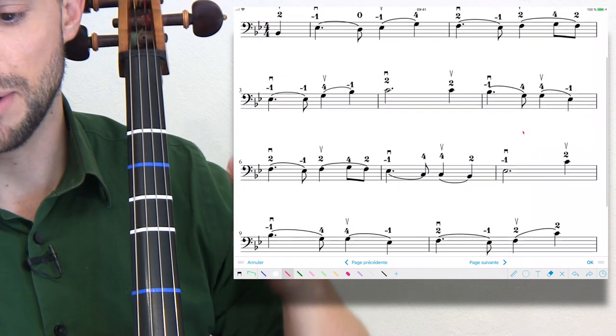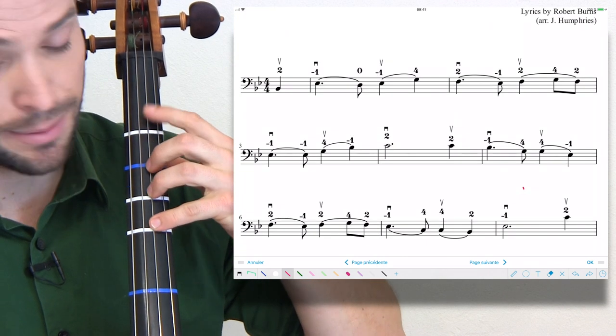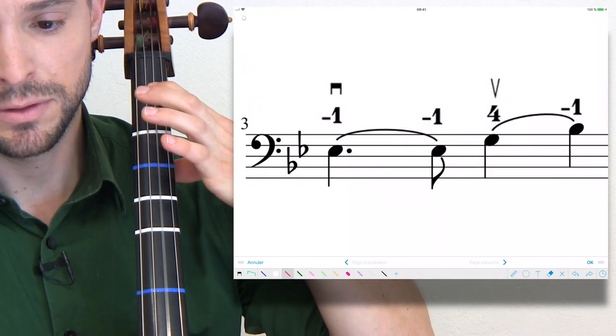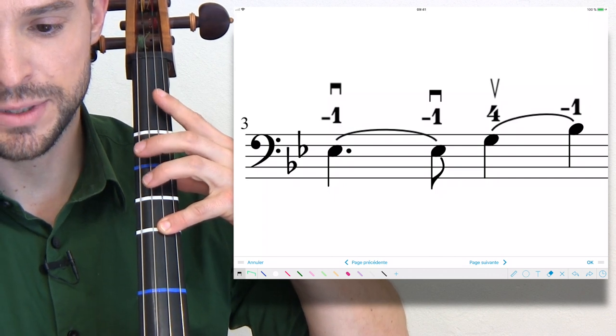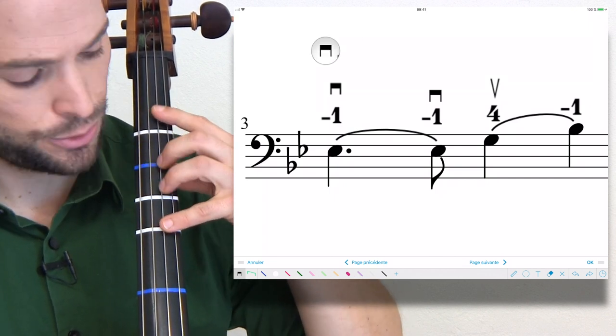Follow the bowing in the third measure. It's a double down bow, so it's a down, down, up, and those two E flats.